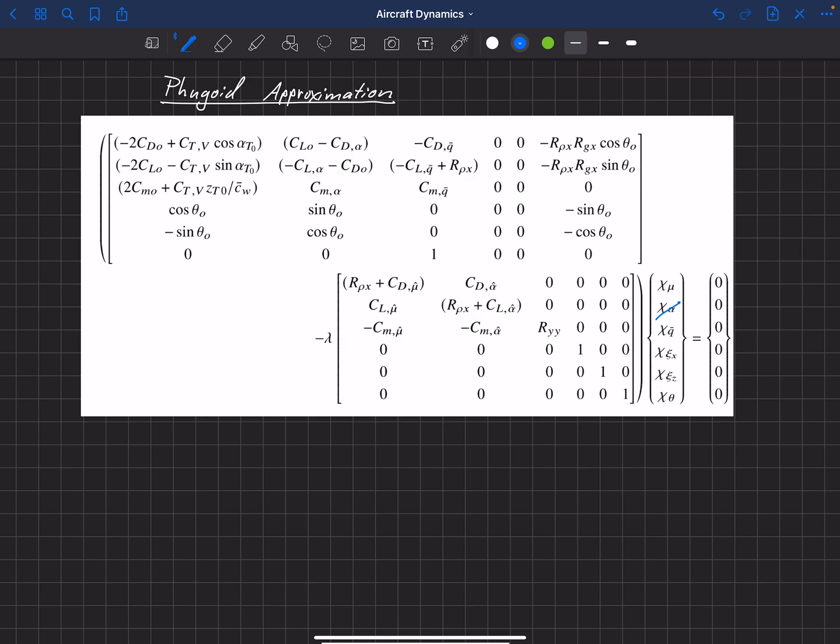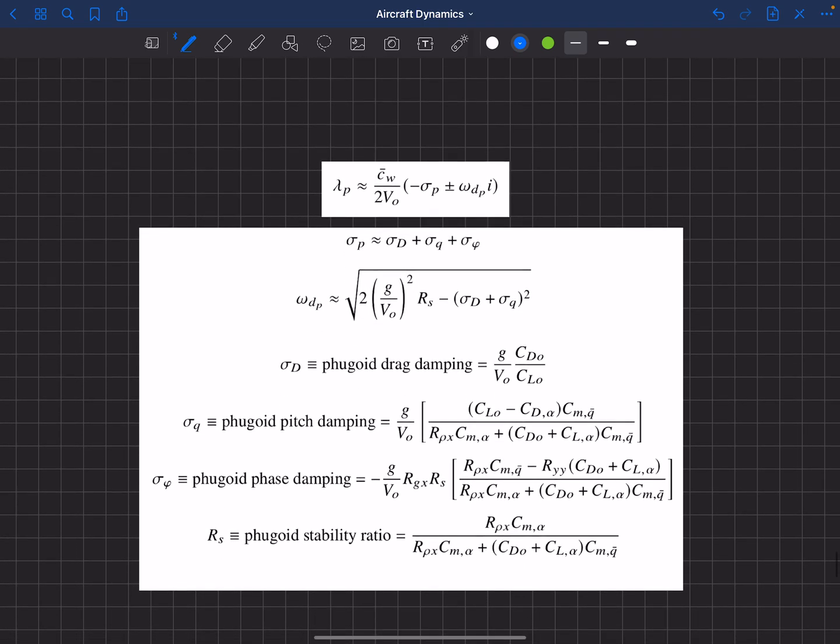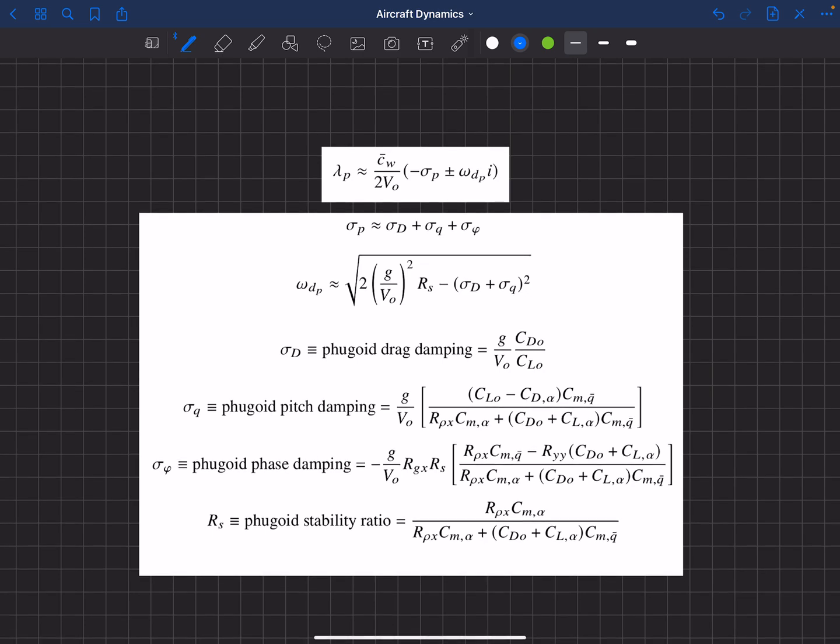He shows that over a range of properties of aircraft, it is more accurate than the traditional Lancaster-based approximations for the Fugoid. What I've done here is I've rewritten his approximation kind of in my own words a little bit.